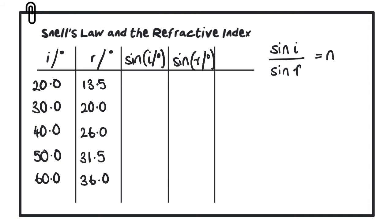There are two ways of proving the ratio is constant. The first is by calculation: add a final column to the table computing sine i divided by sine r. If those values are all similar, that proves the ratio is constant. To get the actual refractive index, add all the calculated n values together and take an average.